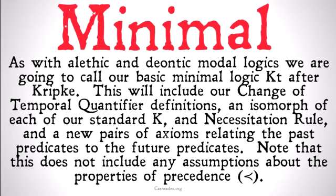As with alethic and deontic modal logic, we are going to call our basic minimal logic KT. We call the other ones K-something, and the K follows from Kripke, after Sol Kripke. We'll call minimal temporal logic KT, T standing for temporal, of course.